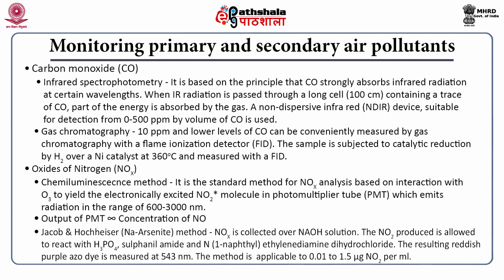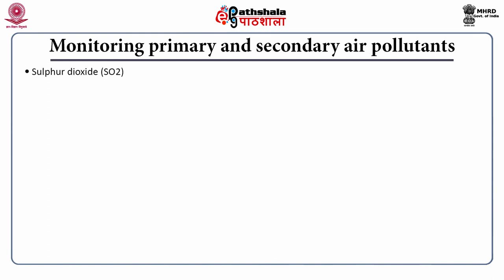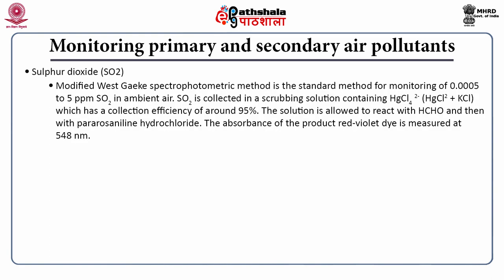Sulfur dioxide is measured by the modified West-Gaeke spectrophotometric method — the standard method for monitoring 0.0005 to 5 ppm SO₂ in ambient air. SO₂ is collected in a scrubbing solution containing HgCl₄ (HgCl₂ + KCl), with a collection efficiency of around 95%. The solution is allowed to react with formaldehyde and then with para-rosaniline hydrochloride. The absorbance of the resulting red-violet dye is measured at 548 nanometers.